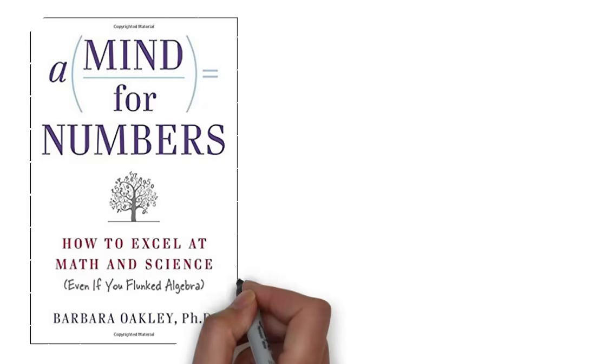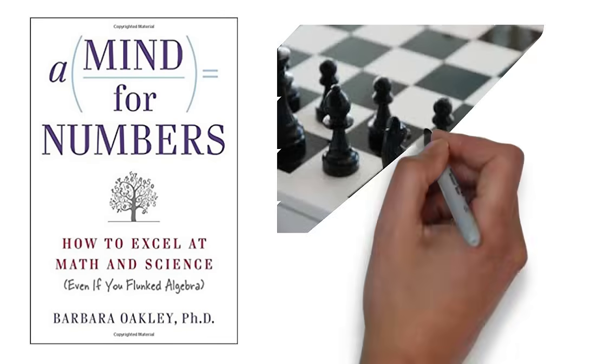This video is going to cover the book A Mind for Numbers, How to Excel at Math and Science. And although the title is very specific, the learning techniques in this book can apply to many different subjects all the way to games like chess.